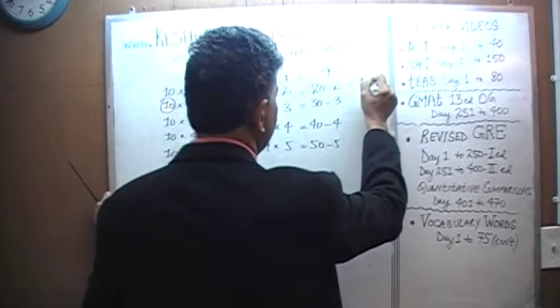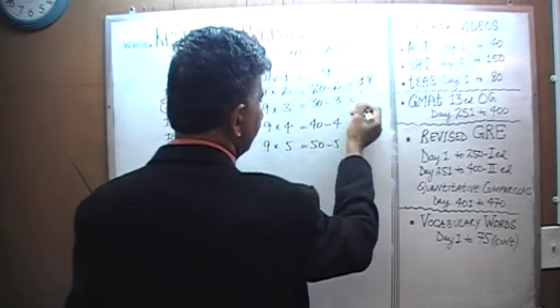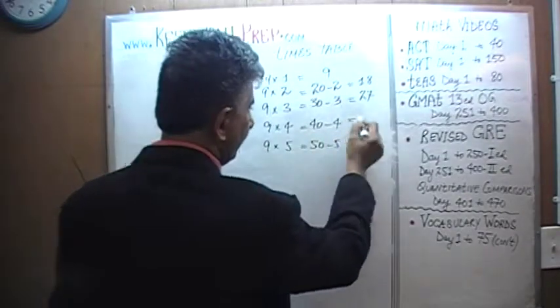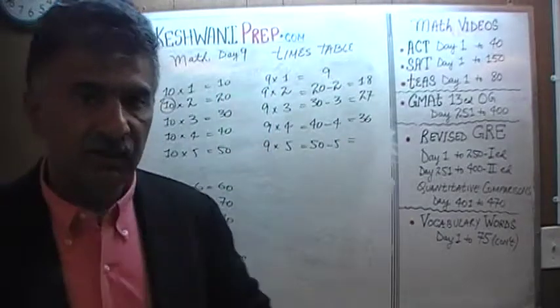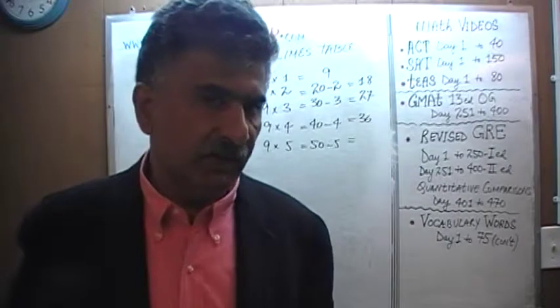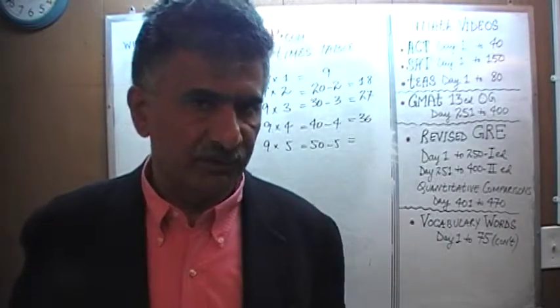So, this is just going to be eighteen. Nine twos are eighteen. Nine threes are going to be thirty minus three, which is twenty-seven. Nine fours are going to be forty minus four, which is thirty-six. And nine fives are going to be the same as ten fives minus a five. If you have ten fives, which you know ten fives are fifty, you take away one five from it, fifty minus five is forty-five.